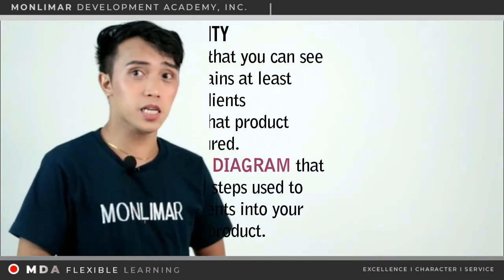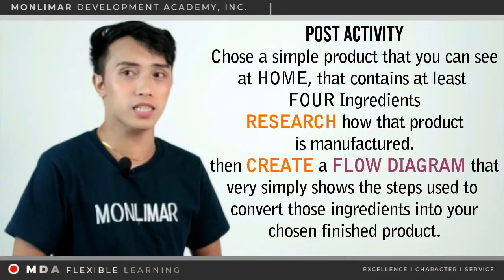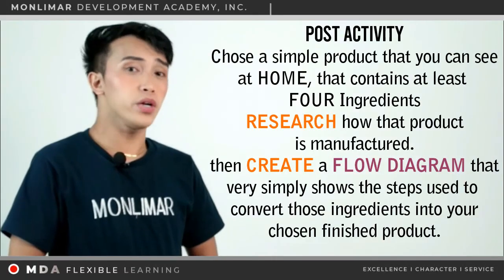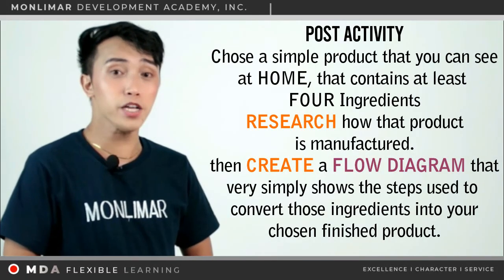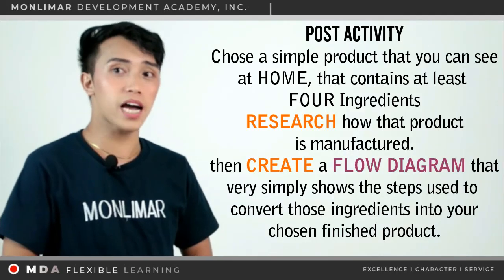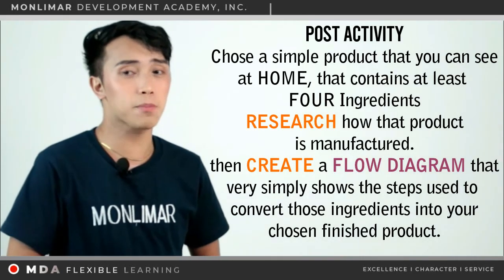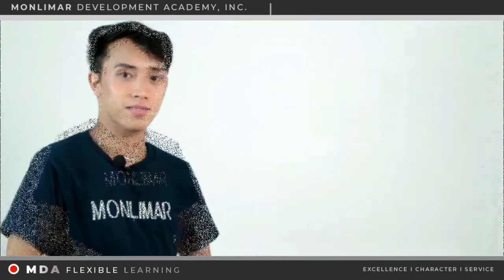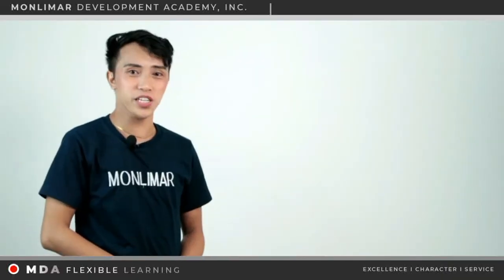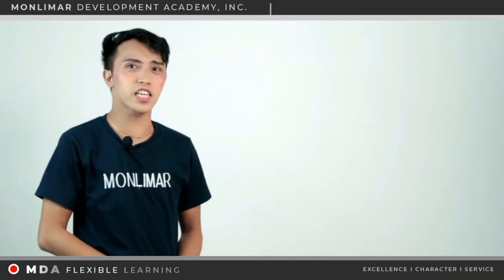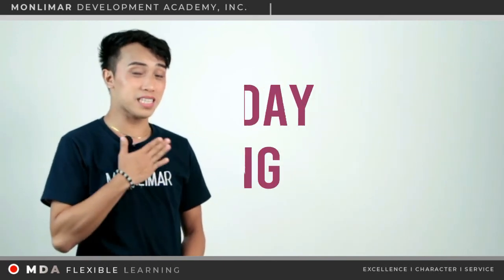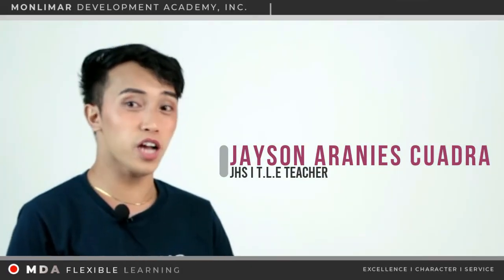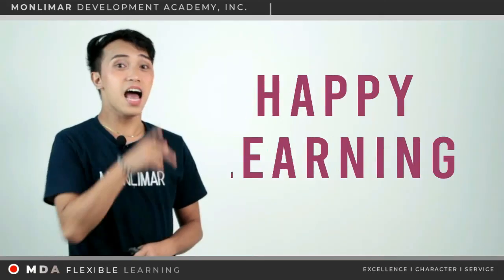For your post activity, choose a simple food product you can find at home that contains at least four ingredients. Research how that product is manufactured, then create a flow diagram that simply shows the steps used to convert those ingredients into your chosen finished product. That's the end of our discussion, and I hope you learned something you may use in your everyday living. I'm Mr. Jason Arania Squadra, your TLE teacher. See you on our next lesson — happy learning!